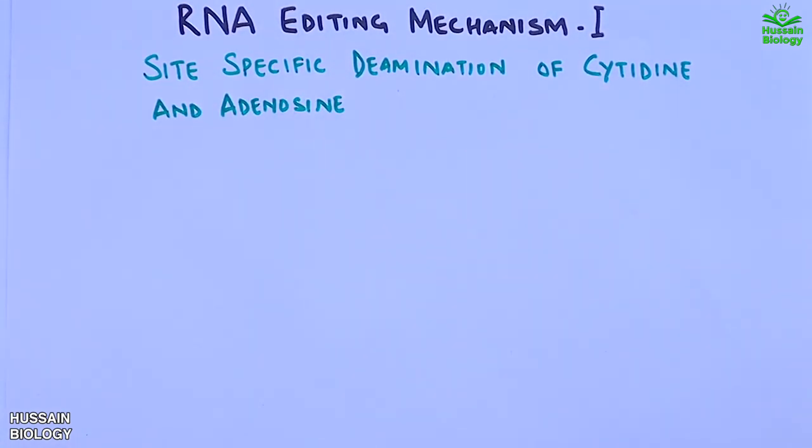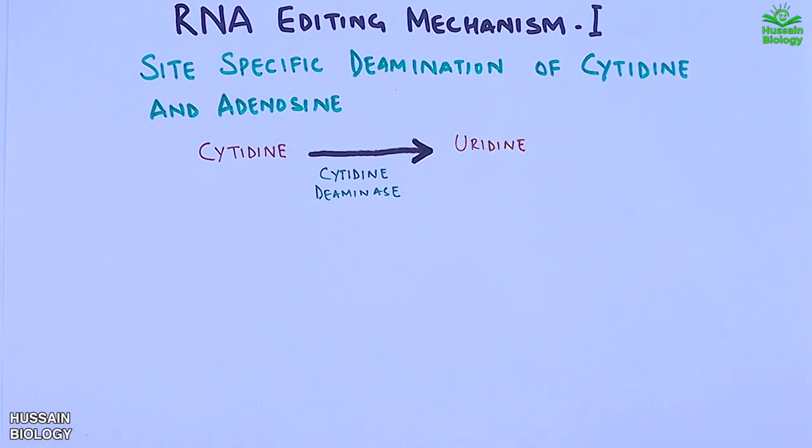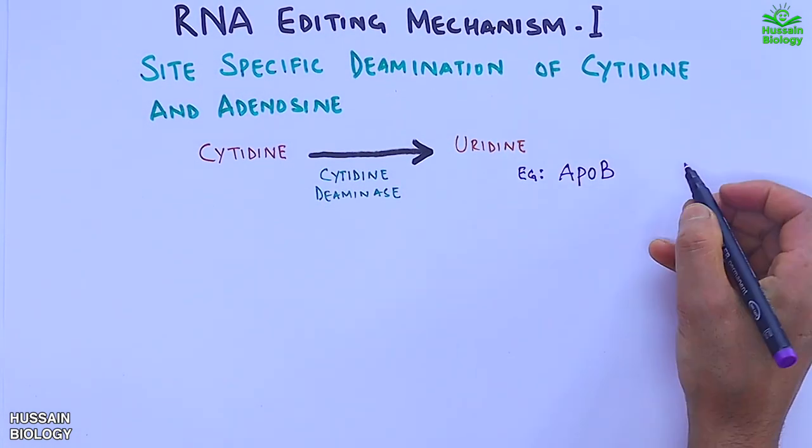Here in this RNA editing process, the cytidine is acted upon by cytidine deaminase enzyme and converts it into uridine. And the best example of this deamination process occurs in apoB gene.